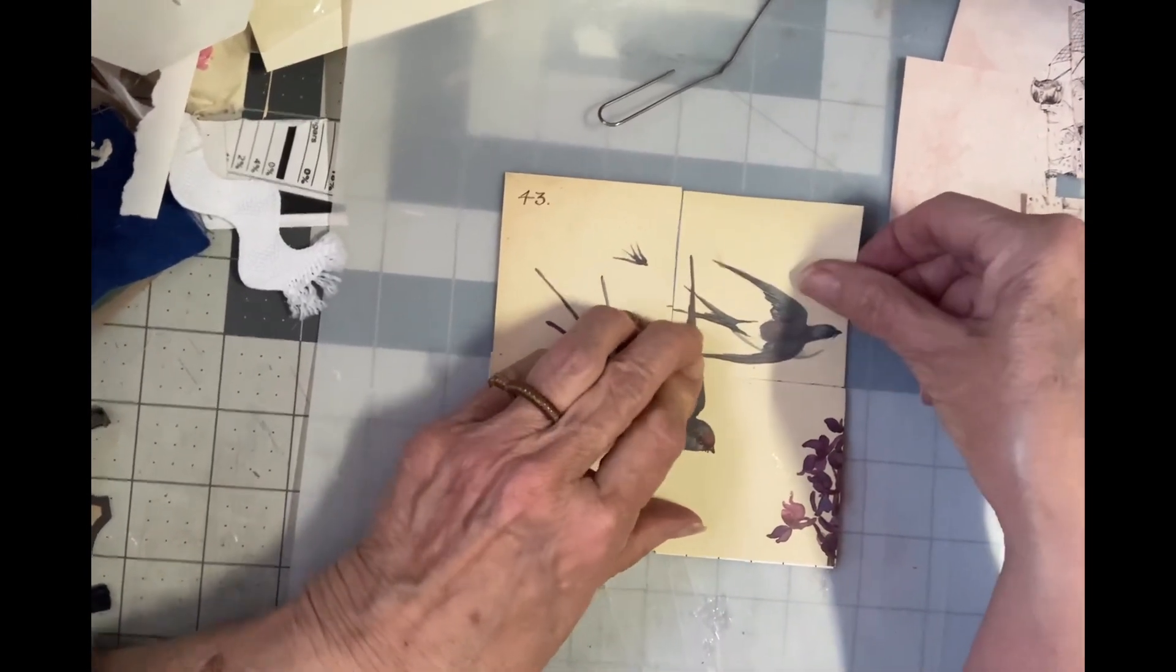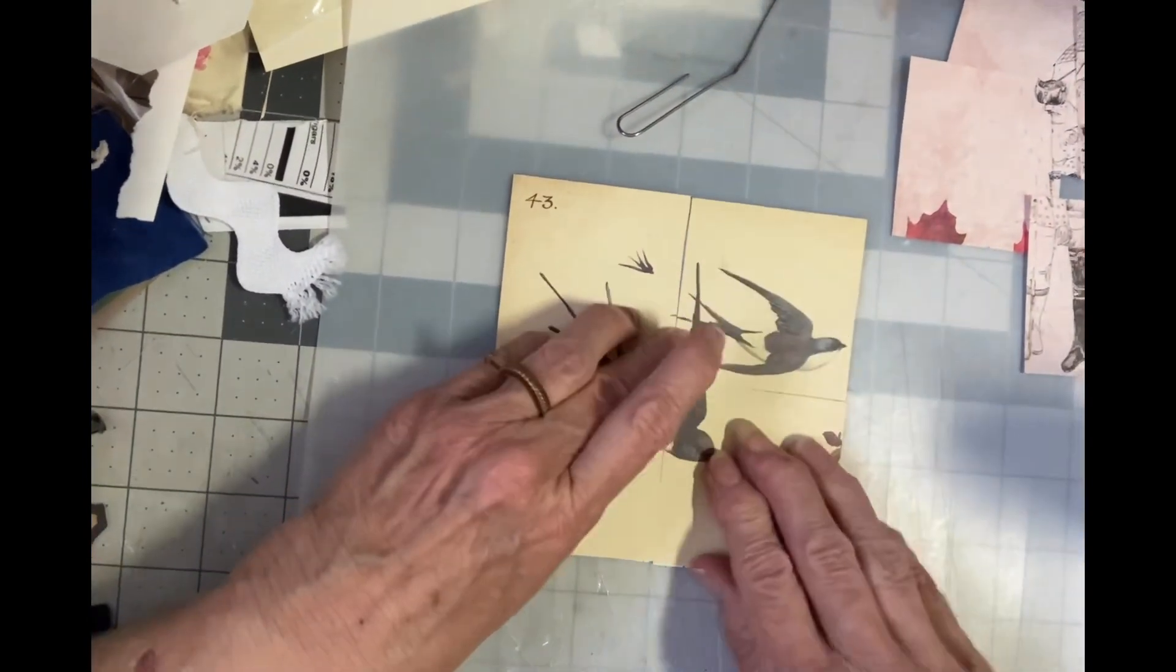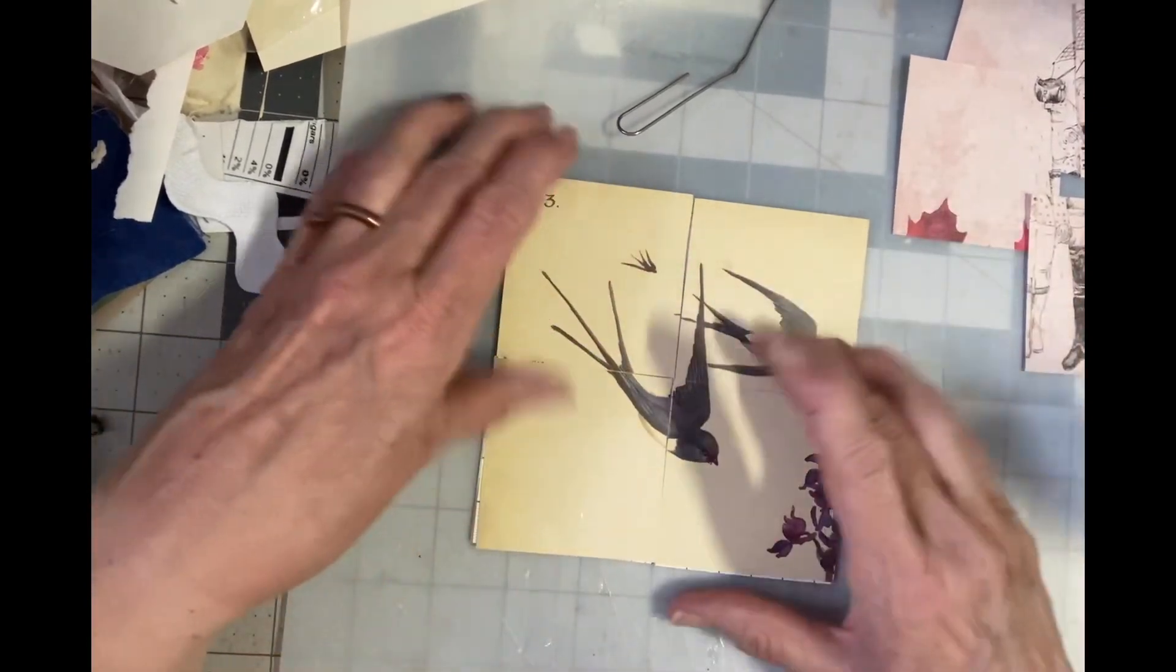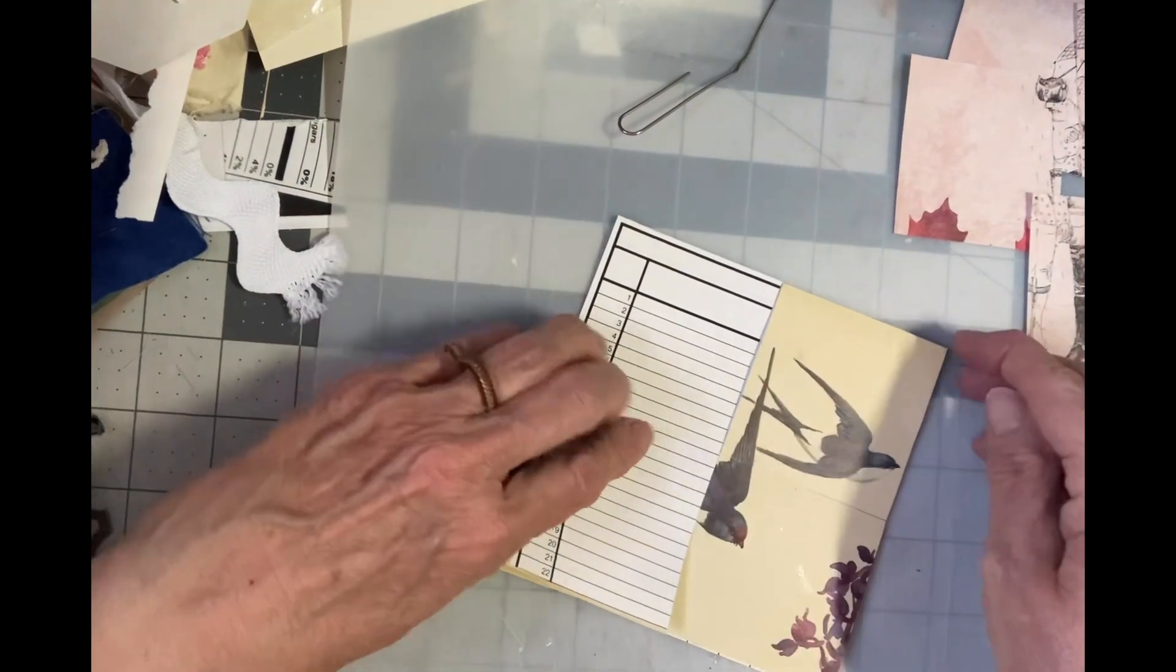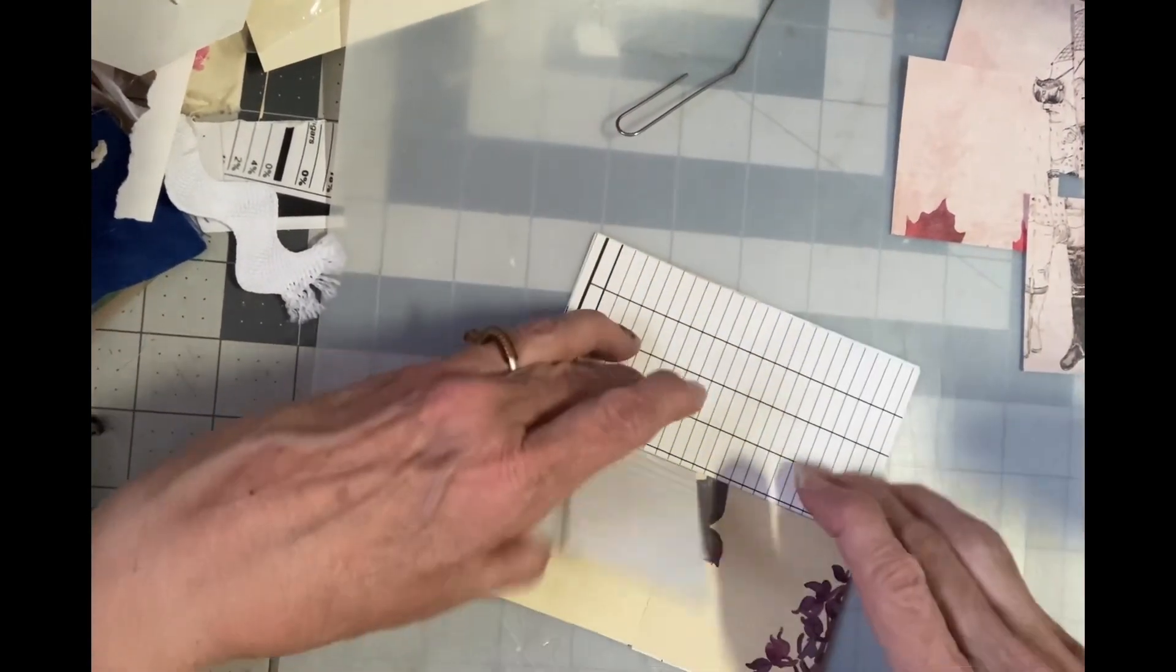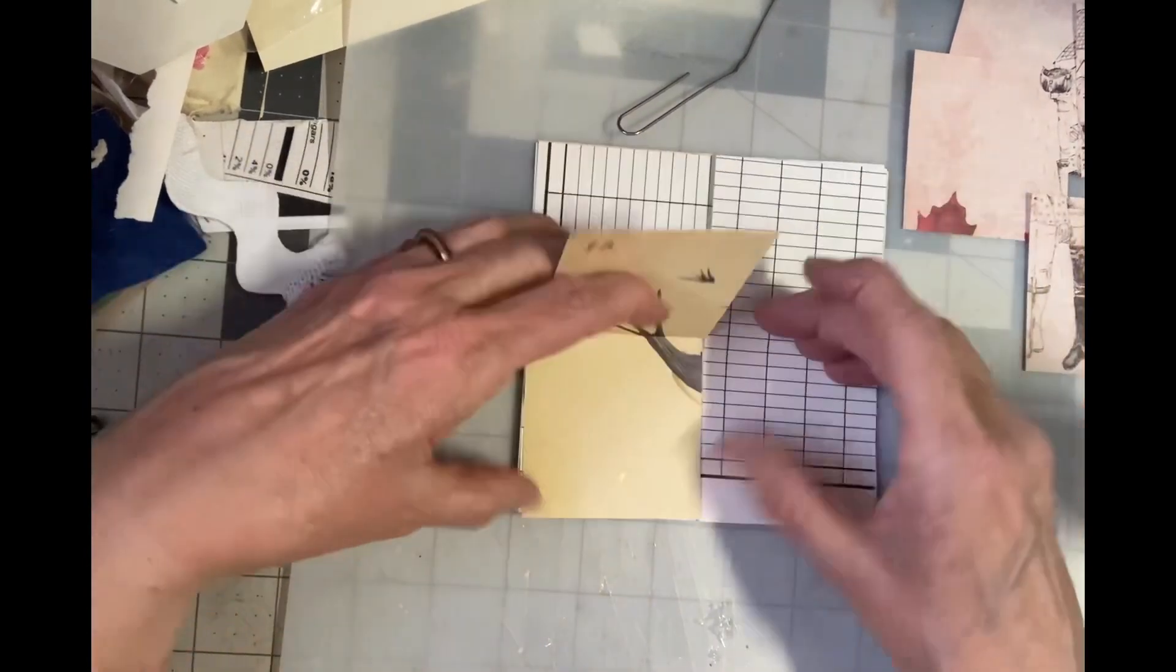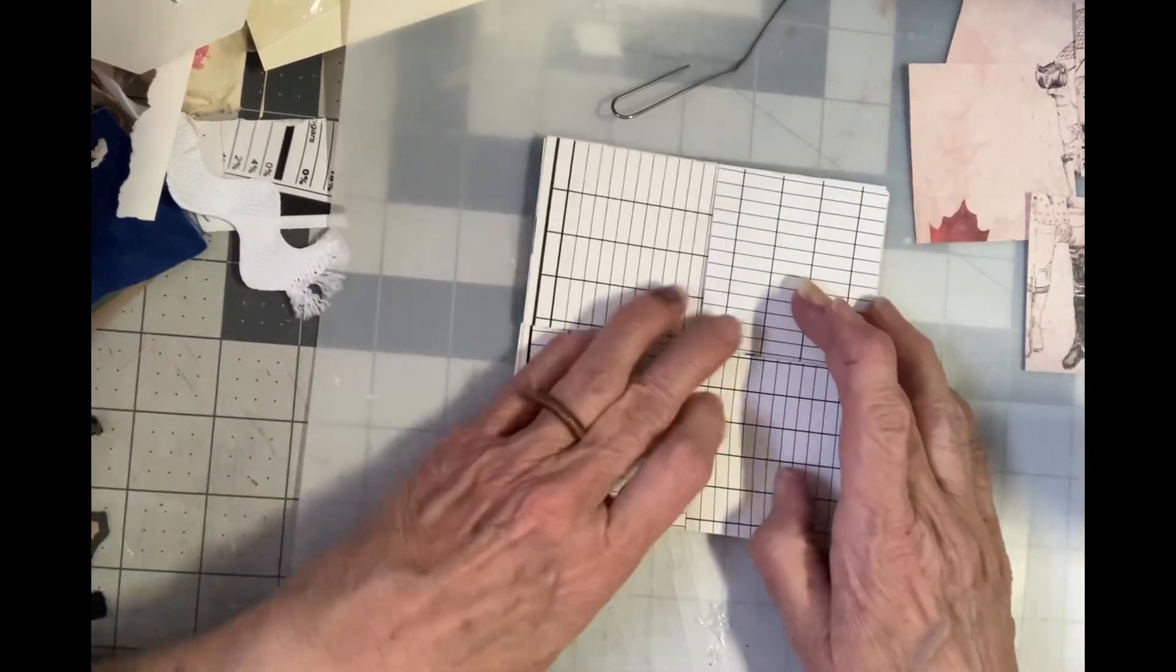So we want this to line up. But then we want to make sure that we can fold these the way they're supposed to fold. We also want to make sure that we haven't accidentally glued them together. So this one goes this way, this one goes this way, this one goes this way, and this one goes this way.